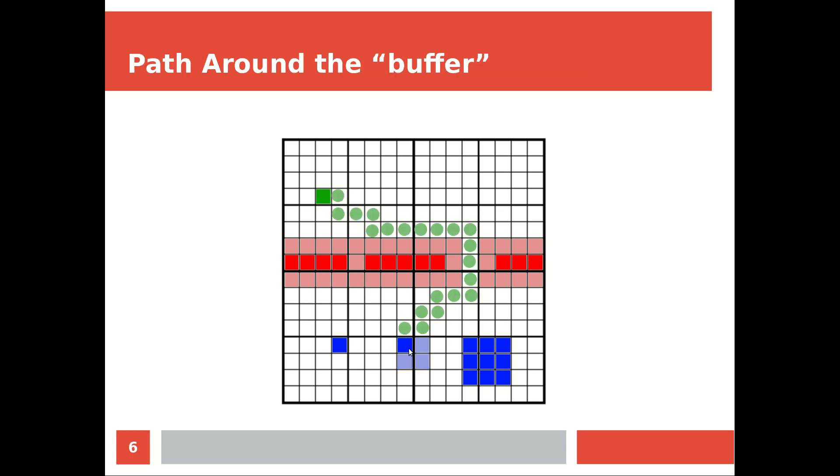And if we look at what the path looks like using this updated field, then the path is exactly what we want. The unit will go right through the center of the corridor, meaning it will not intersect any of the obstacles and get to its destination.